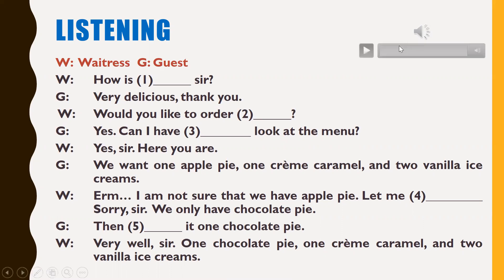Okay, one more time. Conversation two. How is everything, sir? Very delicious, thank you. Would you like to order dessert? Yes, can I have another look at the menu? Yes, sir, here you are. We want one apple pie, one creme caramel, and two vanilla ice creams. I'm not sure that we have apple pie, let me check. Sorry, sir, we only have chocolate pie. Then make it one chocolate pie. Very well, sir — one chocolate pie, one creme caramel, and two vanilla ice creams.